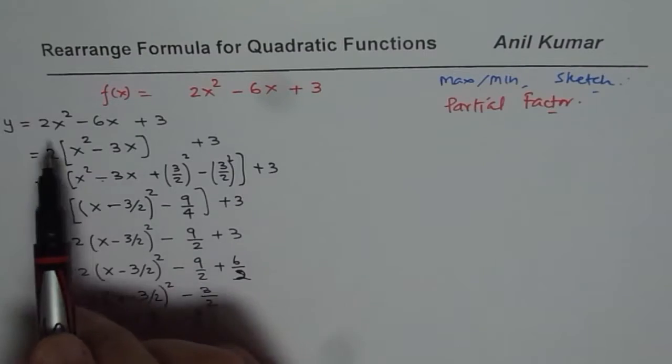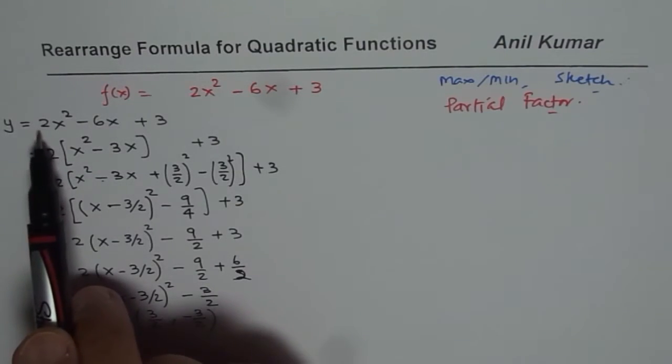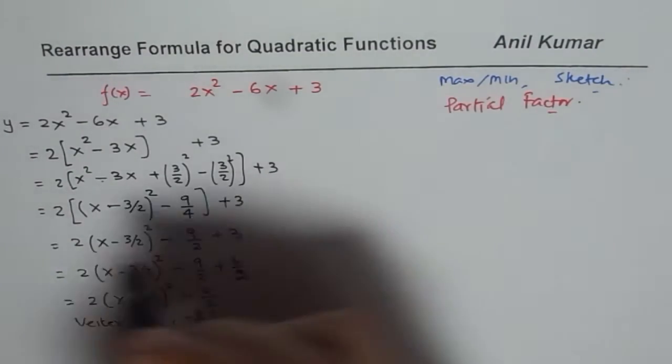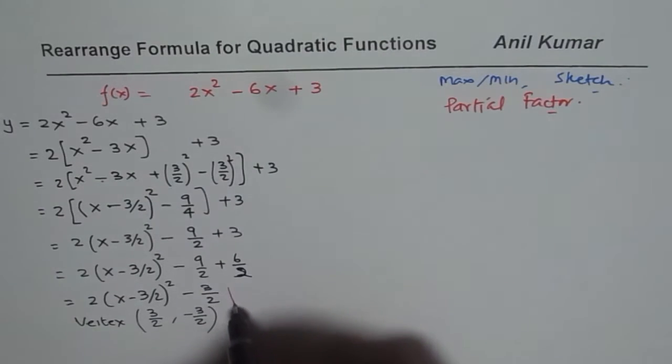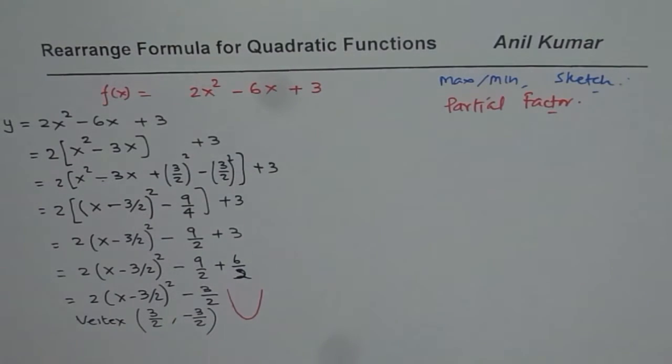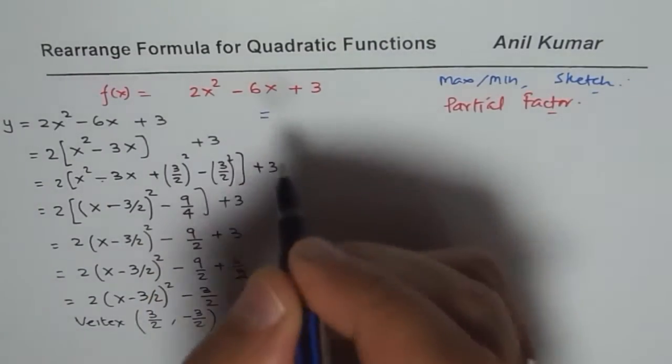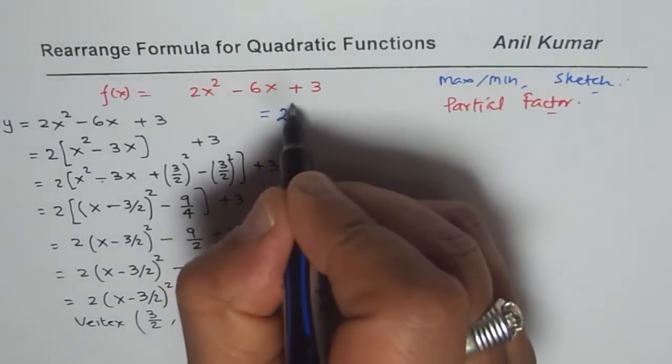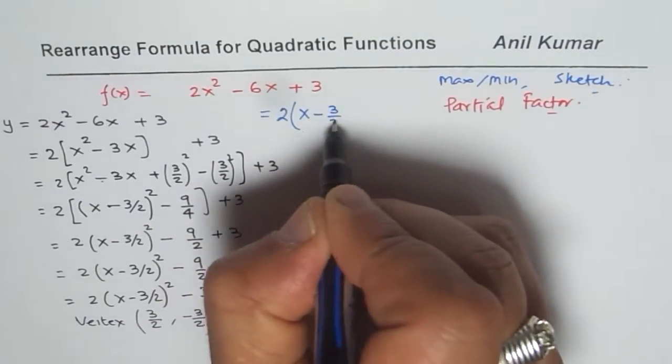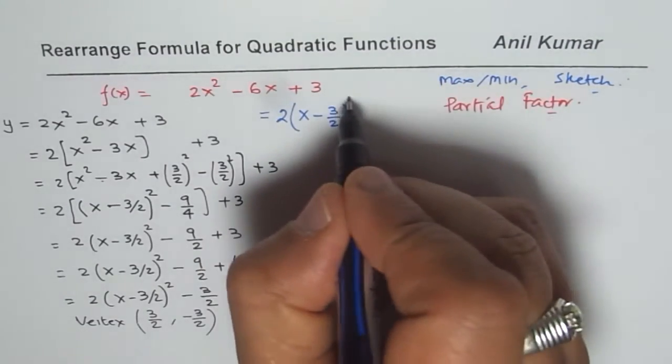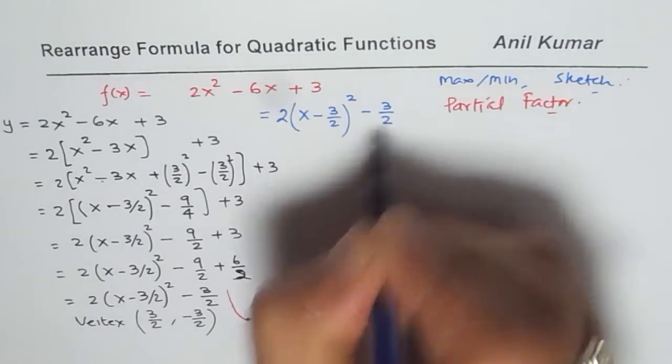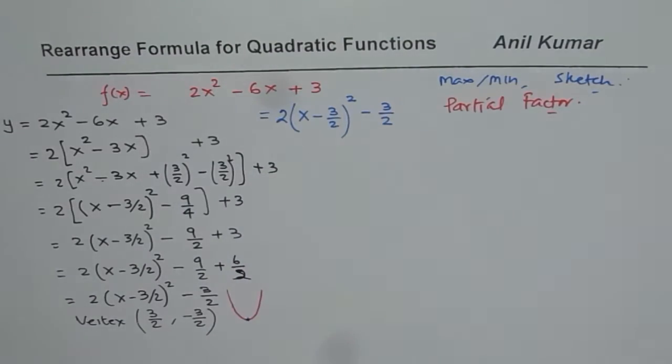Now, when you analyze this particular function, 2 is positive, the leading coefficient, that means it is a parabola which opens upwards. Since it opens upwards, what do we have? We have minimum. So in this particular case, I will write this equation as equal to 2 times x minus 3 over 2 or you can write 1.5 whole square minus 1.5 or 3 over 2.